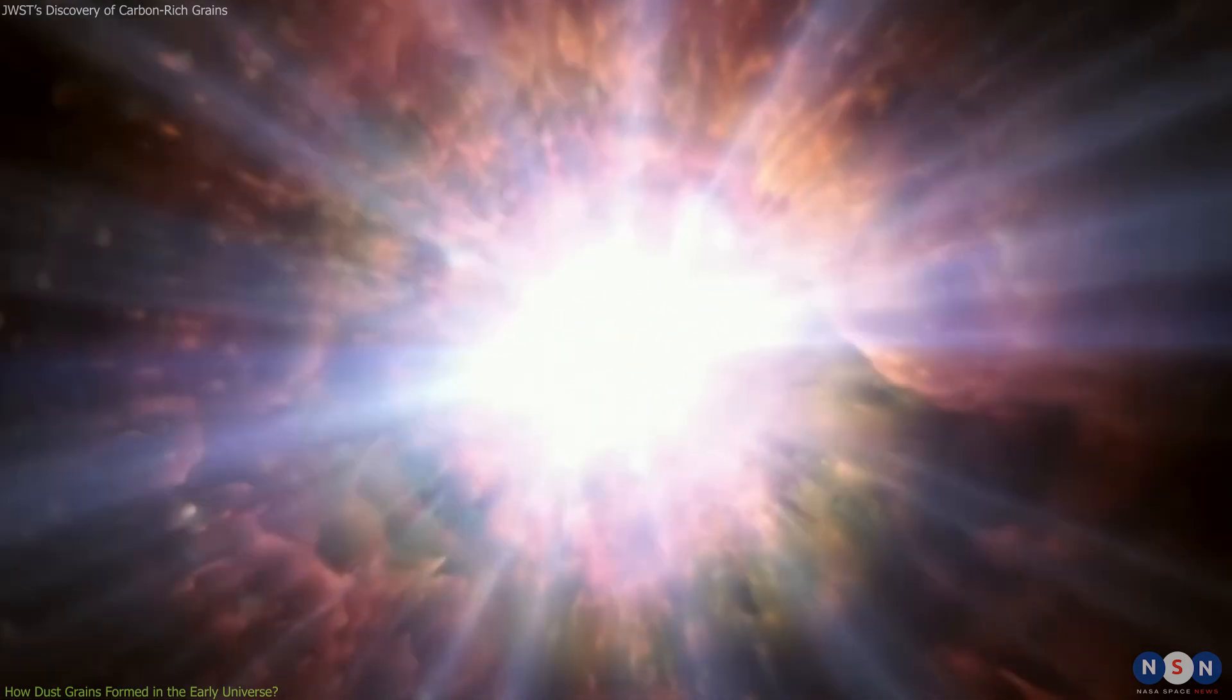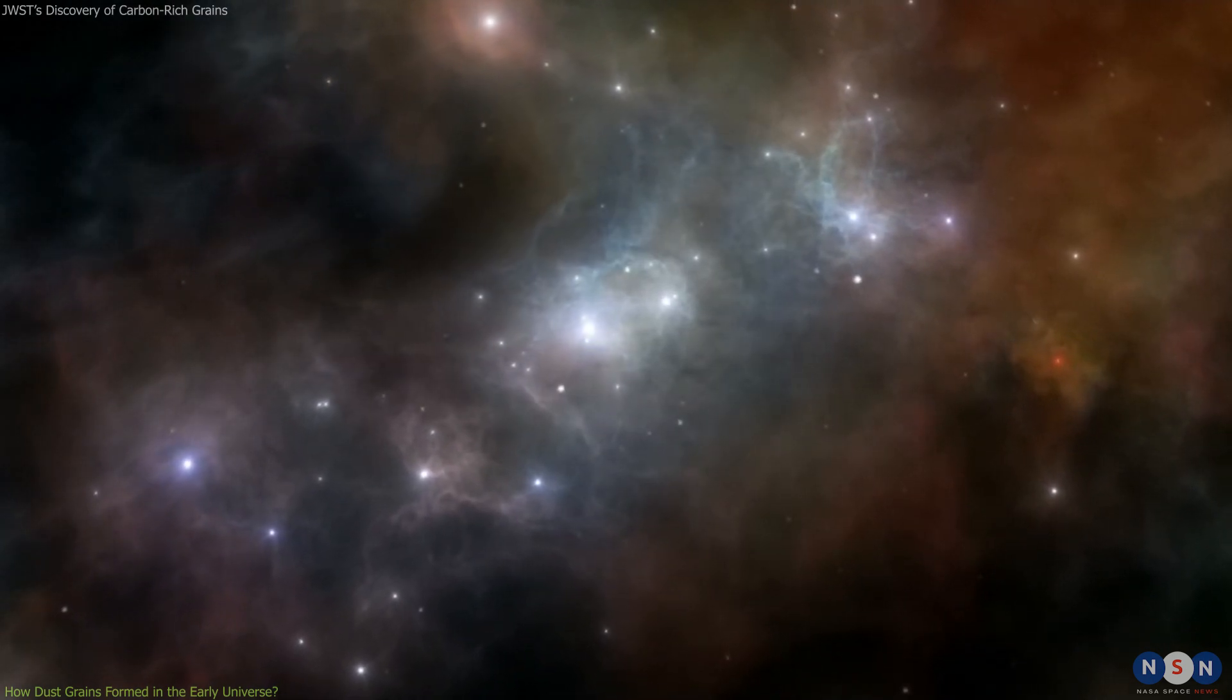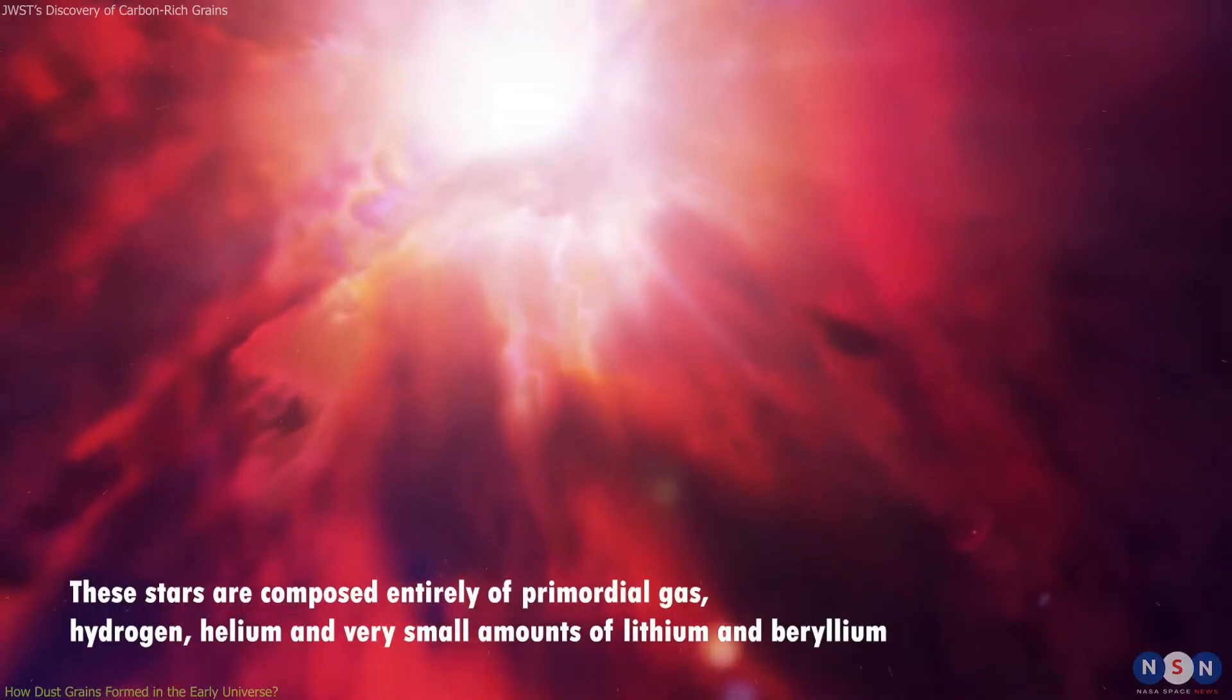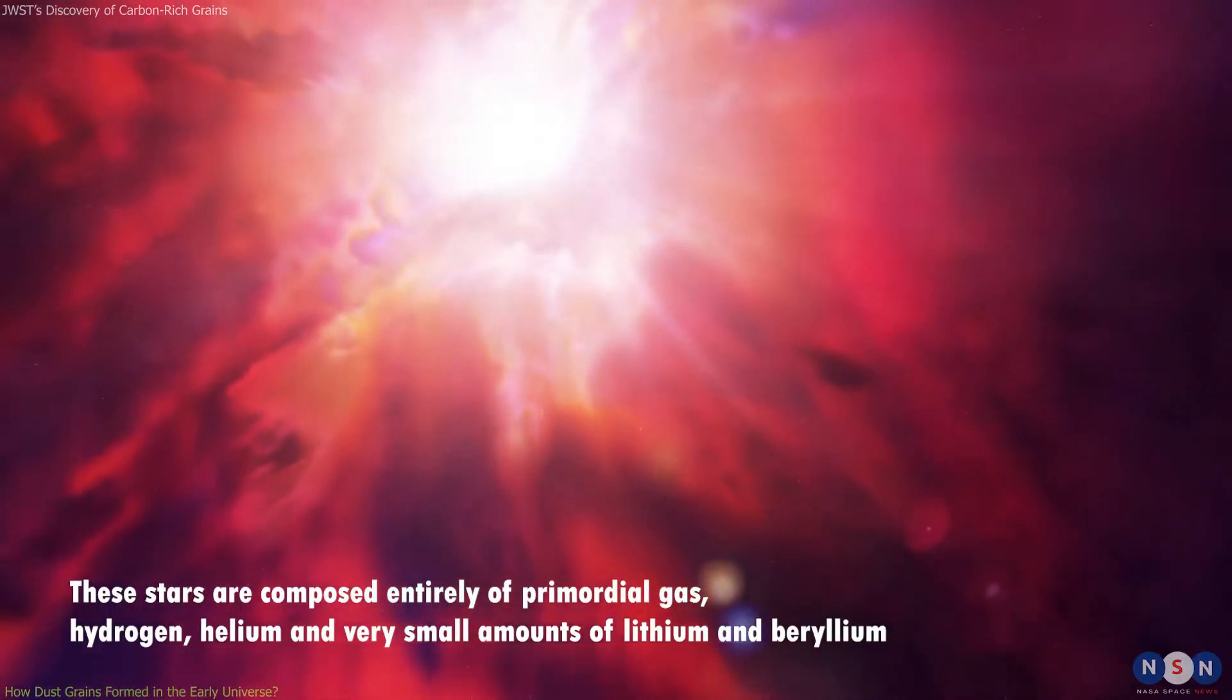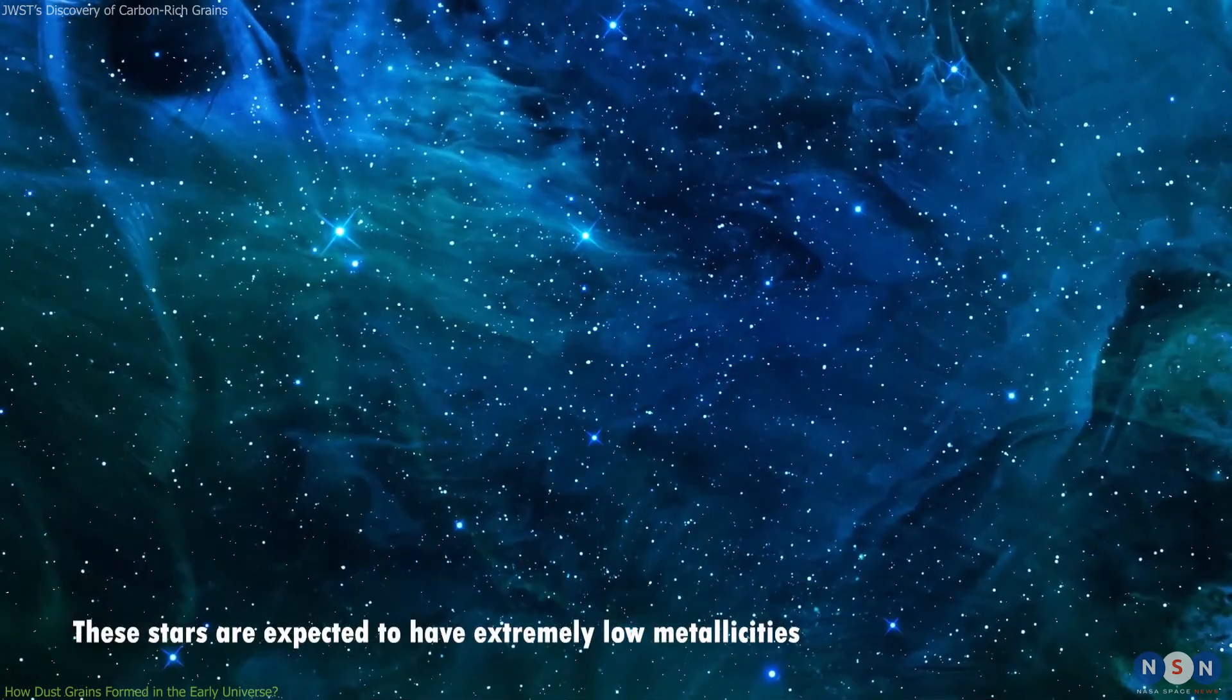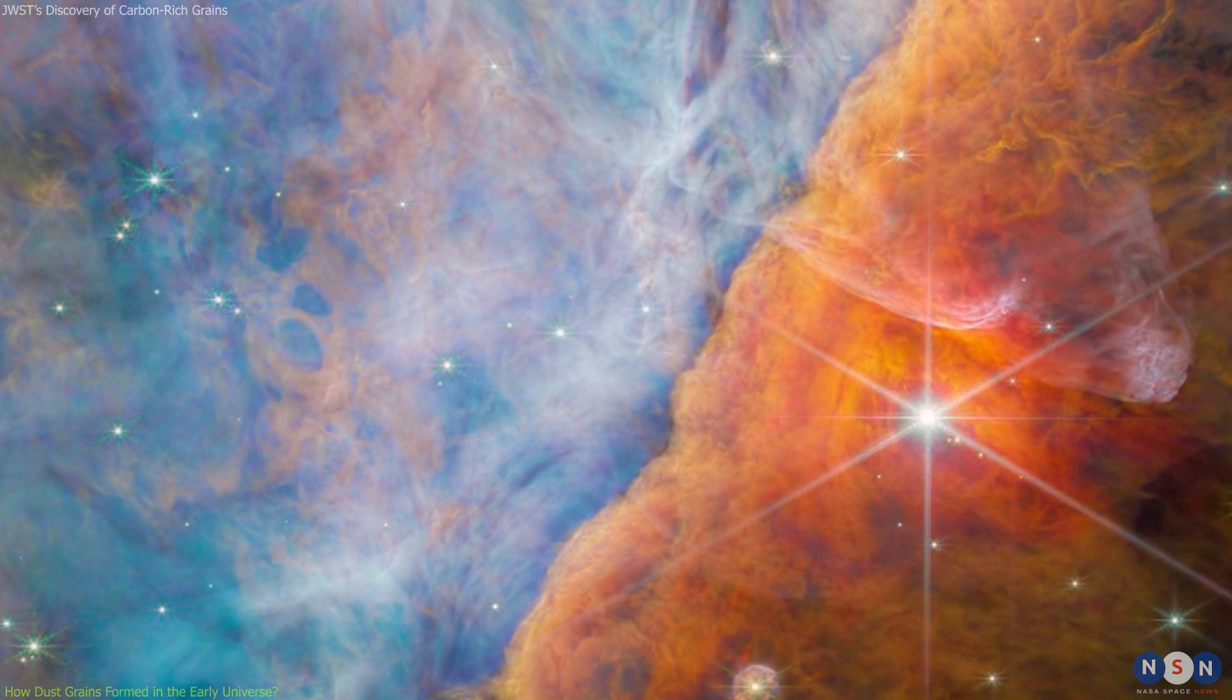The only possible sources of dust grains in this epoch were the very first stars called Population III stars, which were massive, hot, and short-lived. However, these stars were so rare and far apart that they could not account for all the dust we see today.